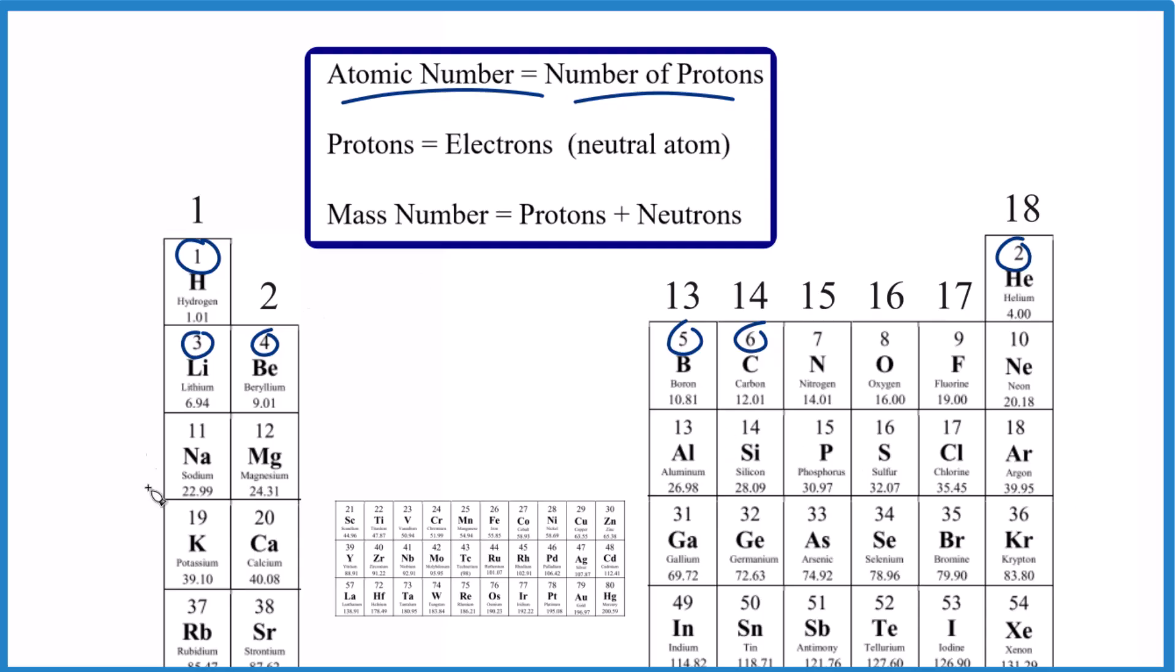But see, all of these elements here on the periodic table, they're neutral. They don't have a plus or a minus written after them. The number of protons equals the number of electrons. So you just look here on the periodic table, find the atomic number. That's the number of total electrons for the element.